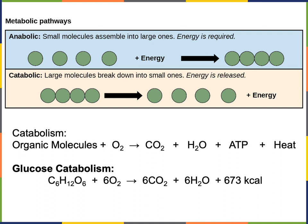An example of a catabolic pathway is glucose catabolism. Glucose contains six carbons, twelve hydrogens, and six oxygens. In glucose catabolism, glucose reacts with six molecules of oxygen, and the products are six molecules of carbon dioxide, six molecules of water, and energy equal to 673 kilocalories. That energy can be converted to heat to warm surrounding tissue, or stored as chemical potential energy to form ATP molecules, which can then be used to drive anabolic pathways.